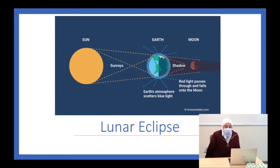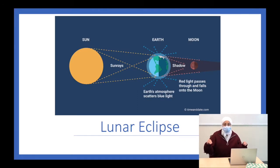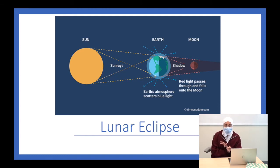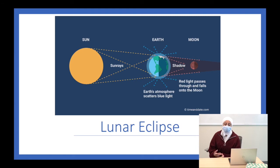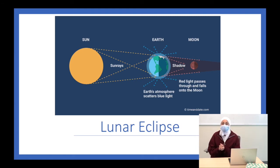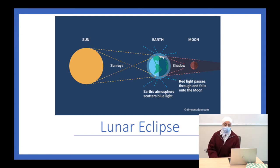Sometimes the Sun, Earth, and Moon align together, forming an eclipse. On Earth, we can see a solar and a lunar eclipse. During a lunar eclipse, the Earth positions itself between the Sun and the Moon, blocking the sun rays from reaching the Moon.